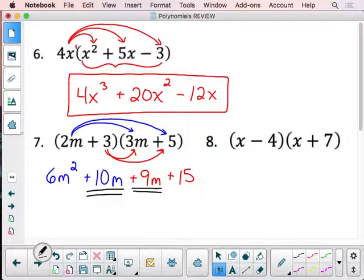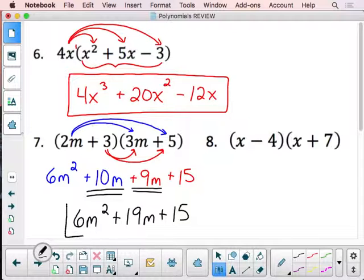But you'll notice that we have some like terms here. We have a 10m and a 9m. So our final answer here, if we combine like terms, is going to be 6m squared plus 19m plus 15. That's going to be our overall answer, assuming we had some like terms to combine.